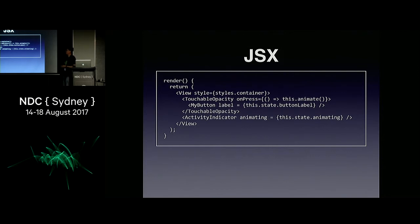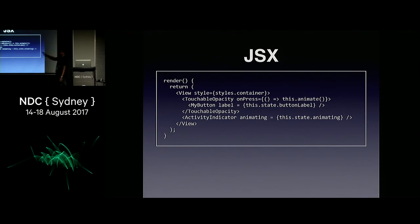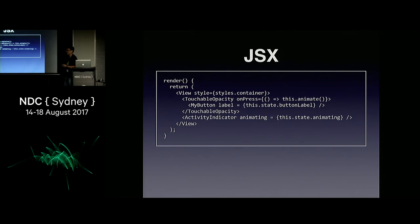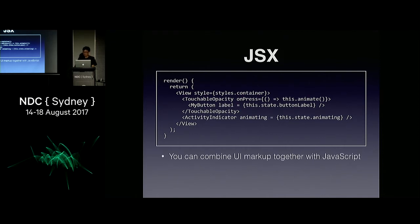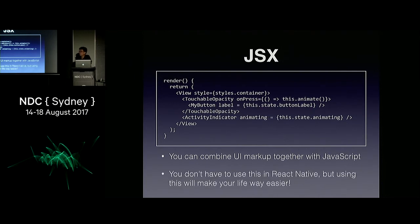This is JSX. It's basically XML plus a little bit of JavaScript code. When I first encountered JSX my first impression was that it looks like ASP — Active Server Pages — which is what we called spaghetti code. Everything old comes back around. You can combine your UI markup with JavaScript, and you don't have to use JSX if you don't want to — but using it will make your life much, much easier.